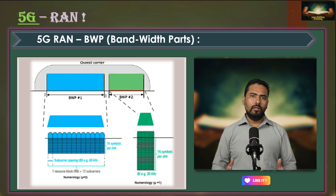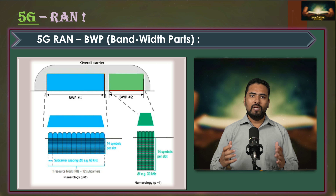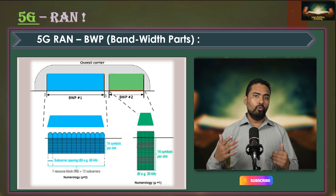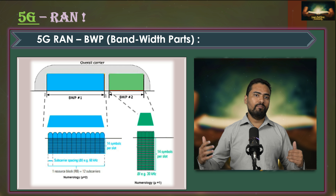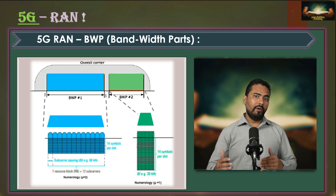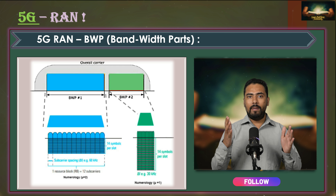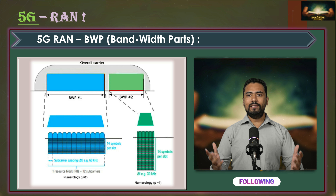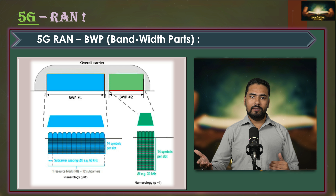For example, if a UE is transferring only a small amount of data like notifications or small messages, there is no need to use wide bandwidth. Wide bandwidth also drains more battery, impacting device battery life. Considering all these requirements, NR introduced the bandwidth part concept.